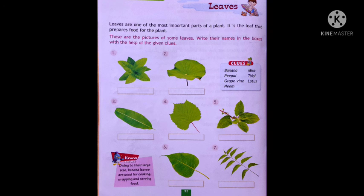Look at the first picture. It's a leaf of a mint. What if you look at the next picture? It's a leaf of a lotus. And next one, it's a leaf of a banana. Look at the next picture. It's a leaf of a green bean.